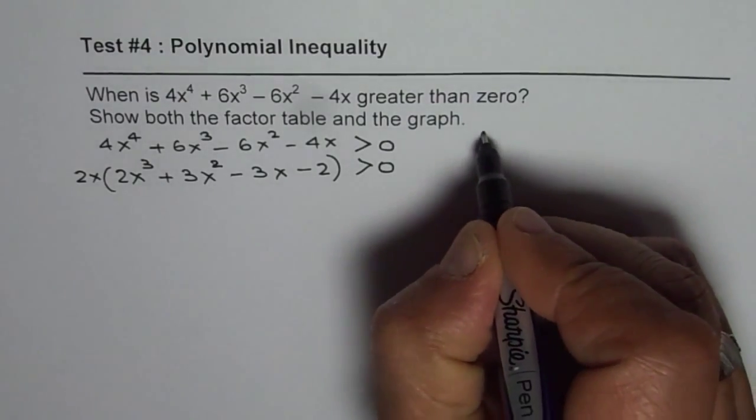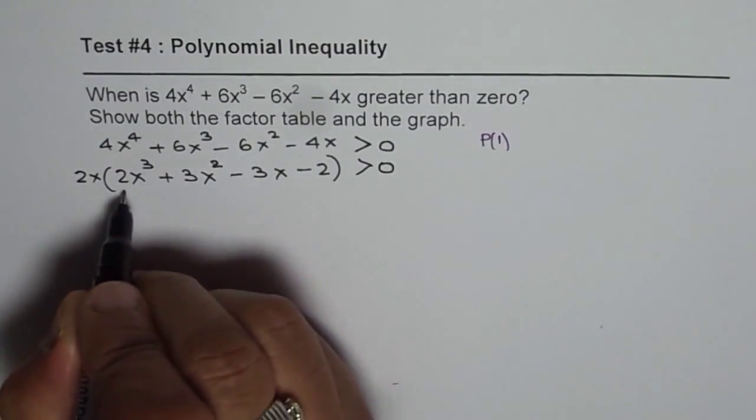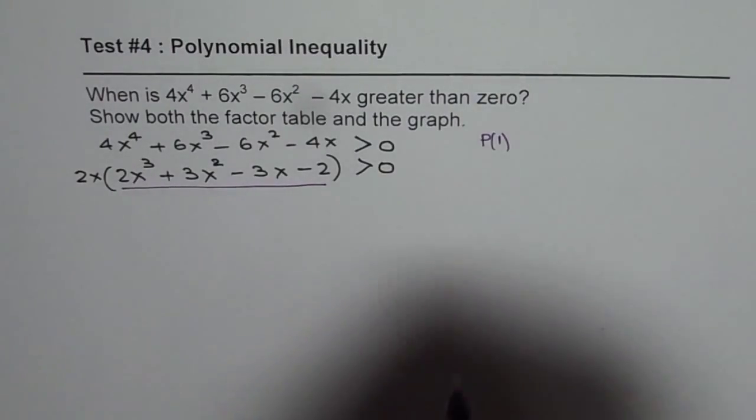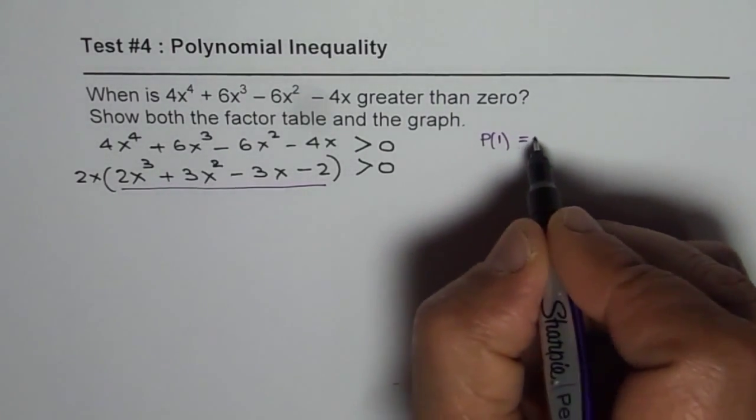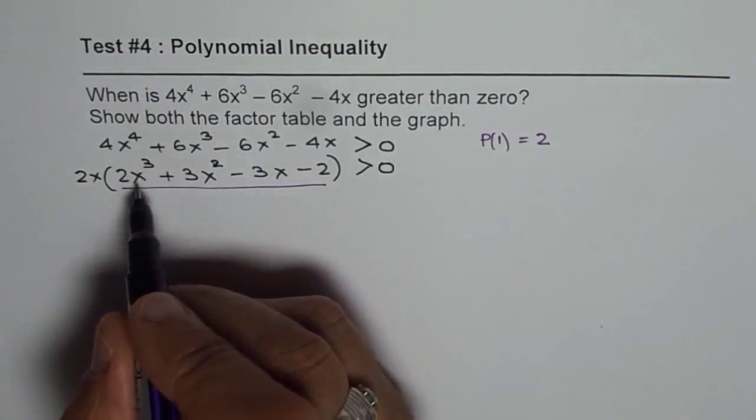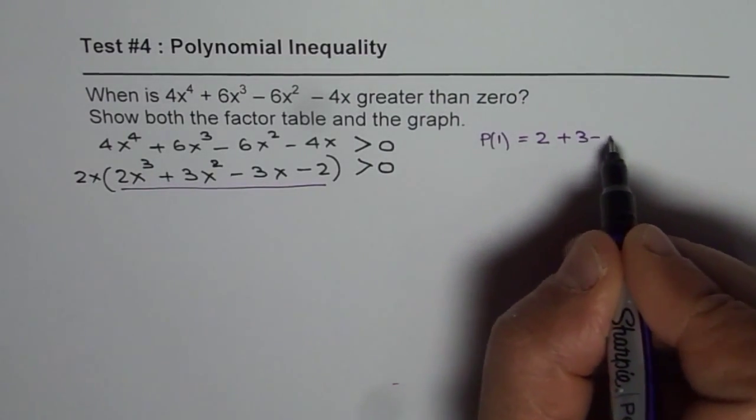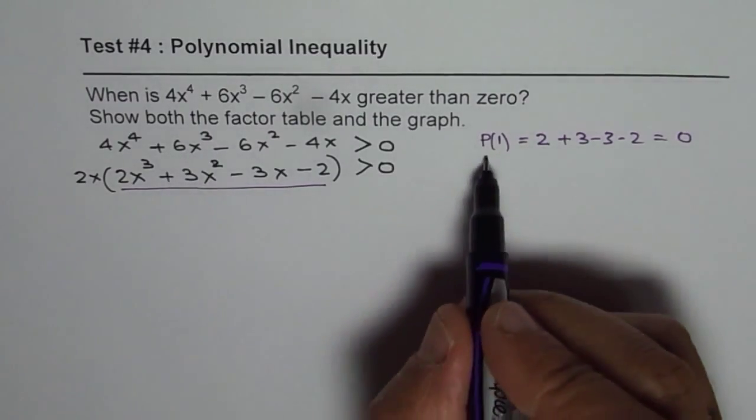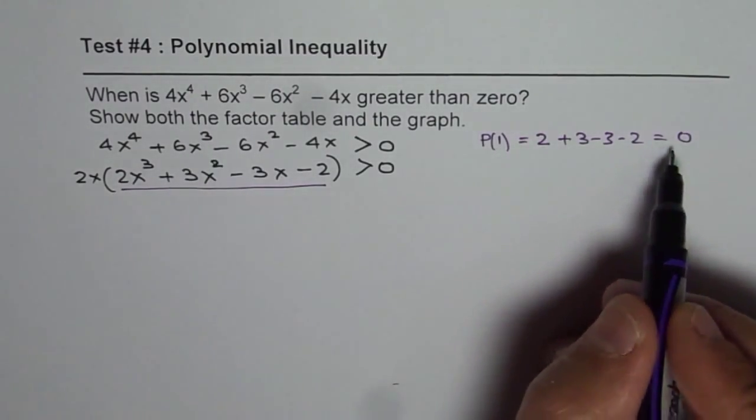So let's try what is p of 1 for this given polynomial. So if I write 1 here, I get 2 times 1 cube is 1 plus 3 minus 3 minus 2 and that is 0. So that means x minus 1 is a factor.